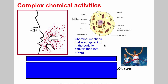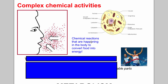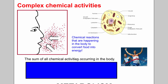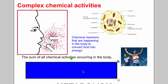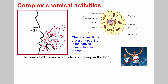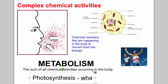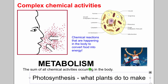Complex chemical activities — this is another thing that living things do. There are chemical reactions going on in their cells that help them do things like convert food into energy. We eat glucose and turn it into energy. The sum of all chemical activities occurring inside the body is called metabolism. Photosynthesis is an example of metabolism — it's what plants do to make food.